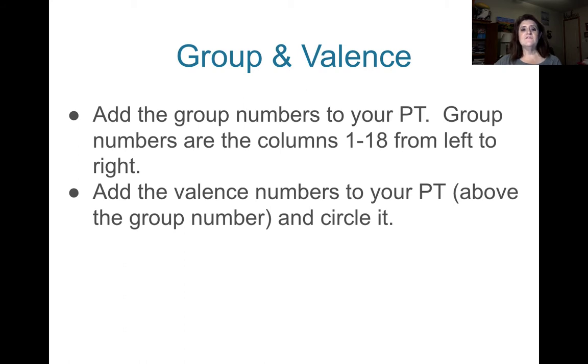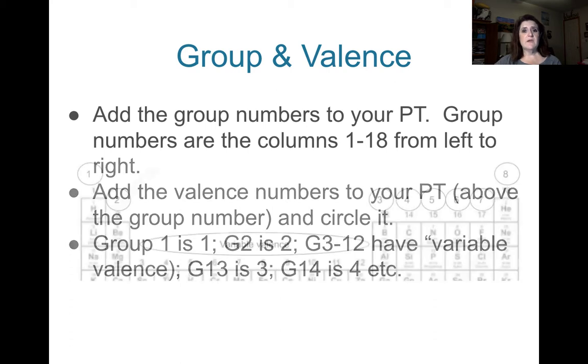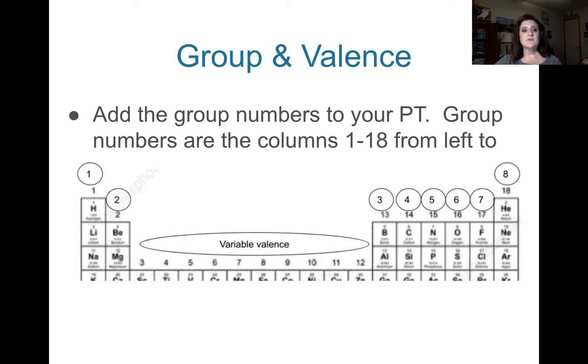Now you're going to add the valence numbers to your periodic table. These are going to go above the group number, and you're going to circle these numbers. So group 1 has a valence of 1, group 2 has a valence of 2, group 3, 3 through 12, have a variable valence, and literally write the words variable valence. Group 13 has 3, 14 is 4, and so on. With the group number written first, the valence written above it, and circled.